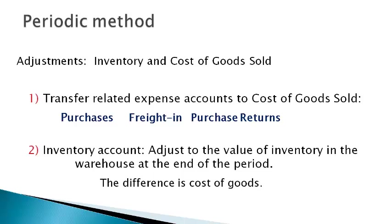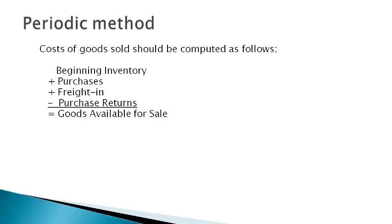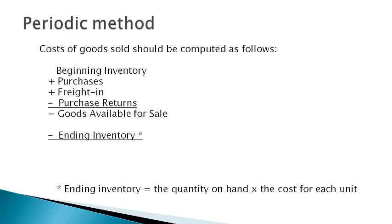The accounts used and the timing of recording inventory movement is different for the perpetual method and the periodic method. However, both methods result in the same value of inventory reported on the balance sheet and the same cost of goods sold reported on the income statement. The cost of goods sold is computed by first adding the cost of all goods available for sale, then subtracting ending inventory in the warehouse to get the cost of goods sold.